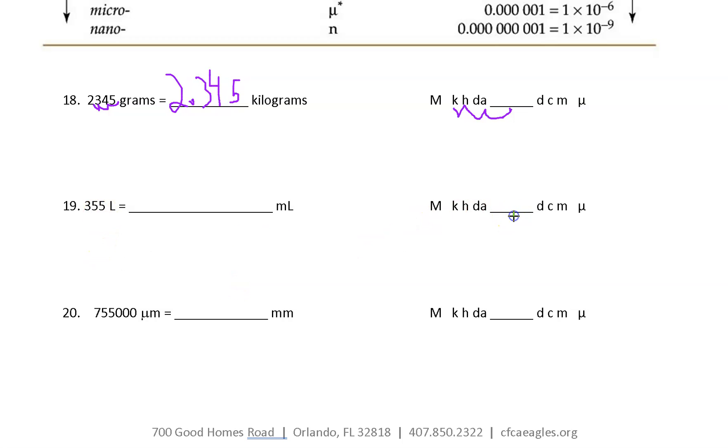For number 19, I'm still starting in the base unit, but I'm moving to milli. So one, two, three. And I moved to the right three times. So this one, I had three, five, five, and there's my decimal, right? Decimals after the whole number. And I go one, two, three.